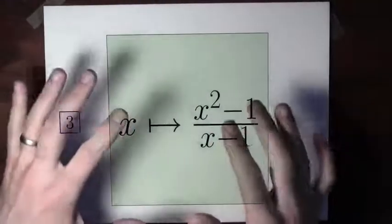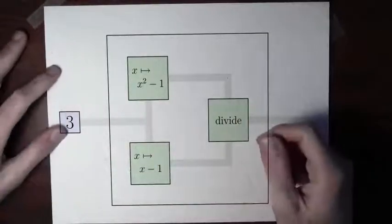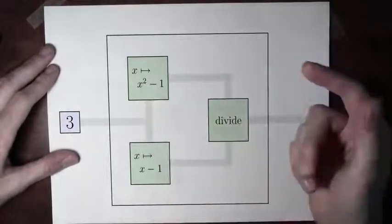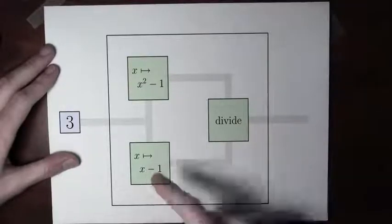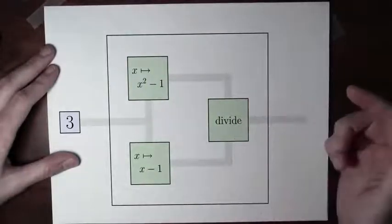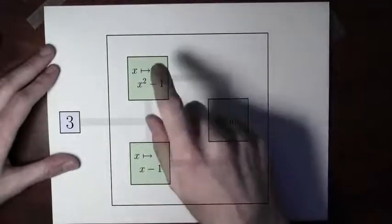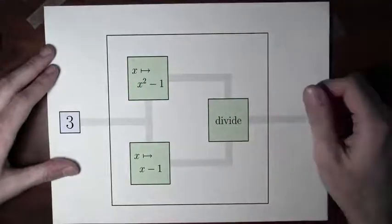Let's look at that example again with a little more detail. This is a pretty complicated function, but we can open it up and look at how it's actually doing its calculations. You could think of this function as having three different steps: one step squares its input and subtracts 1 to calculate the numerator, another step subtracts 1 from its input, and the outputs of those two steps get plugged into the division to produce the final output.